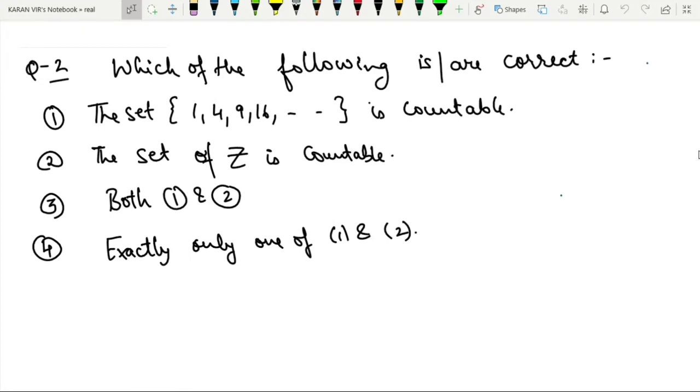Hi friends, welcome to my YouTube channel. In this question series on real analysis, the second question is: which of the following is or are correct? More than one option may be correct. The set {1, 4, 9, 16, ...} is countable. The set of integers is countable. Both 1 and 2 are correct. The fourth option is exactly one, only one of 1 and 2 is correct. So let's see.